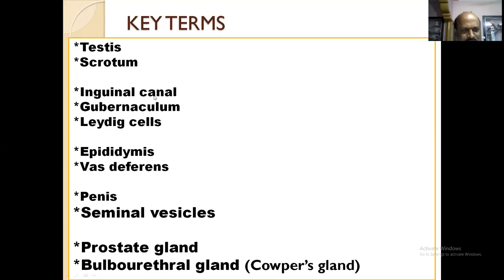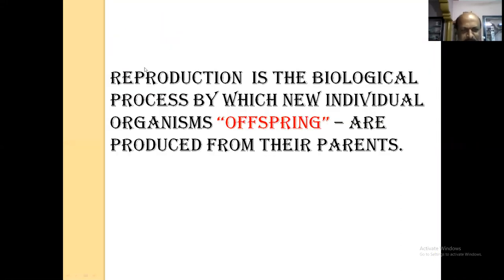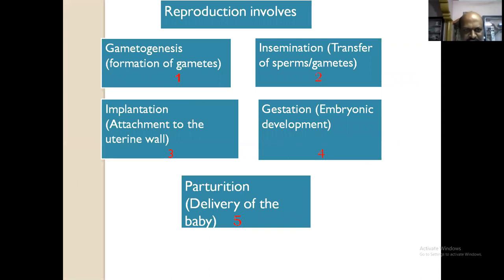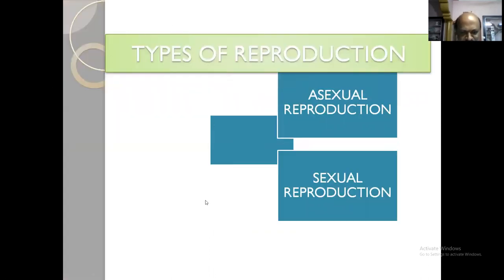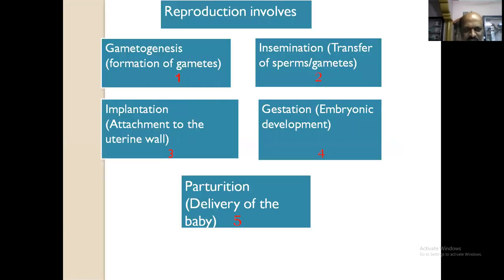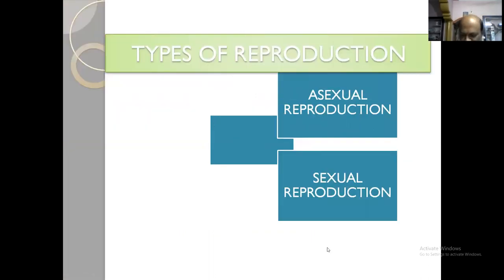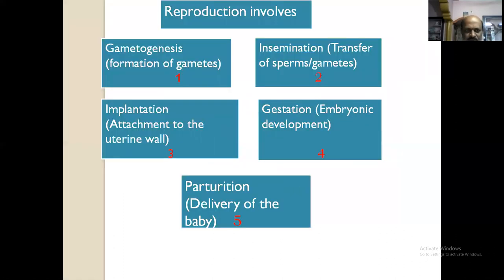Before discussing these, we need to know the definition of reproduction. Reproduction is the biological process by which new individual organisms or offspring are produced from their parents. Types of reproduction are two: asexual and sexual. The reproduction involves the following steps: gametogenesis, insemination, implantation, gestation, and parturition. These are the five steps involved in reproduction.